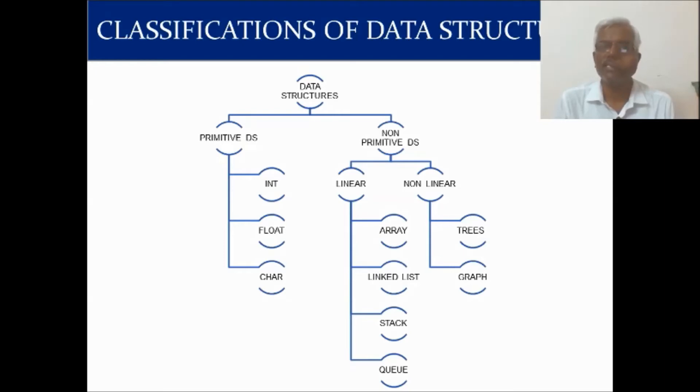Primitive data structure you may have already studied in the second semester in Programming in C. In C, there are four fundamental data types: integer, float, char, double. These are all fundamental data types. These we call primitive data structures or primary data types. Without these data types, we cannot build any model in the particular programming language.